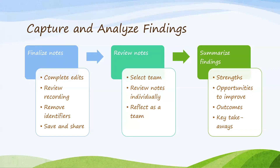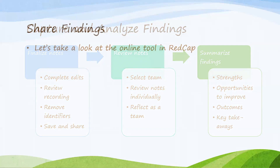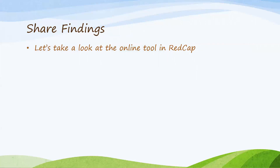Next, the team will review the notes and get familiar with them. The team can include your full group from Step 1 or a subset of partners. Each member should read through the focus group notes, separately identify key takeaway messages, and then come together as a full group for discussion and reflection. Finally, the team will summarize findings including strengths of home visiting in the community, opportunities to improve, outcomes of home visiting, and other key takeaways. You can then enter your findings in the same REDCap form used for Step 1, uploading your notes along with your key takeaways.